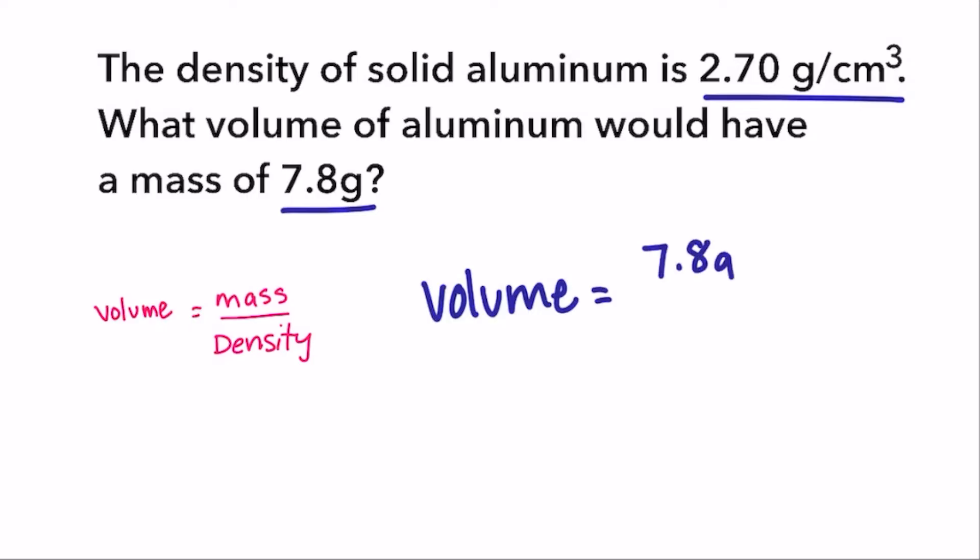We substitute the values from our problem and then we divide 7.8 grams by 2.70 grams per cubic centimeter. The grams cancel out and our final answer is 2.9 cubic centimeters.